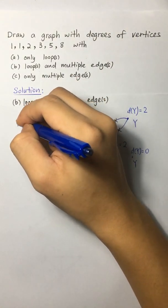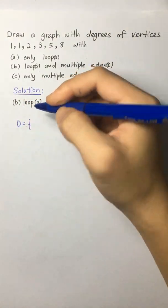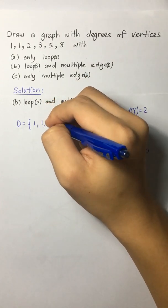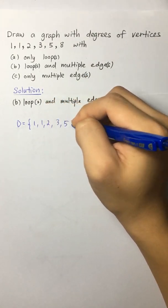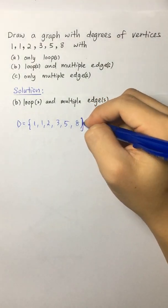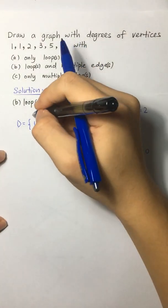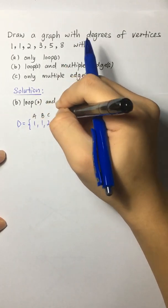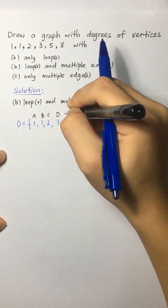So let's start by writing the set of D, 1, 1, 2, 3, 5, and 8. This is a set. And then we label it with A, B, C, D, E, and F.